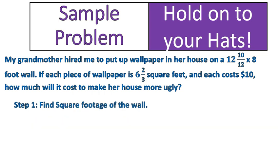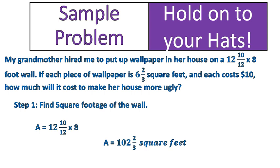Step number one: the square footage of the wall. We calculate the square footage of twelve and ten-twelfths by eight feet using our area equation — multiplying length and width. Twelve and ten-twelfths times eight equals one hundred two and two-thirds. That is our square footage of the wall.